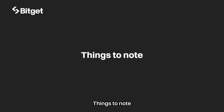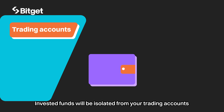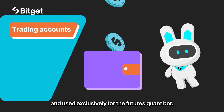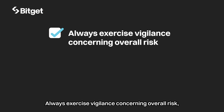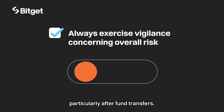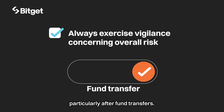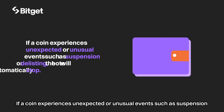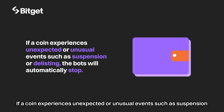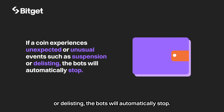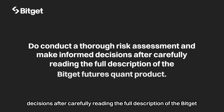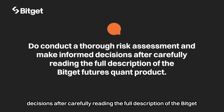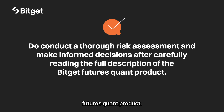Things to note: Invested funds will be isolated from your trading accounts and used exclusively for the futures quant bot. Always exercise vigilance concerning overall risk, particularly after fund transfers. If a coin experiences unexpected or unusual events such as suspension or delisting, the bots will automatically stop. Do conduct a thorough risk assessment and make informed decisions after carefully reading the full description of the BitGet futures quant product.